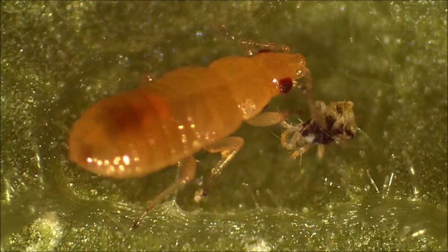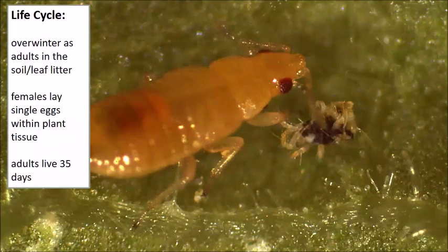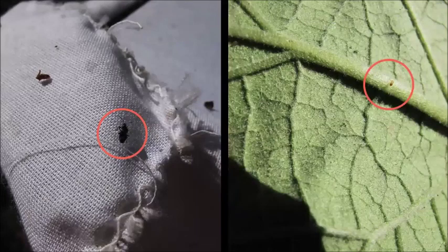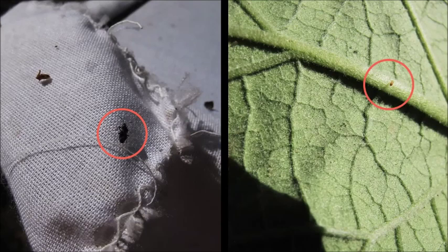The minute pirate bug has incomplete metamorphosis, so the immatures are nymphs developing their wings. Here's a nymph just finished feeding on a spider mite. The adult lays its eggs inside the leaf tissue, so you'll never see the eggs. They hatch into nymphs and immediately go foraging for food. When we're out scouting using beating trays, we can see a lot of these predators as well with that method.